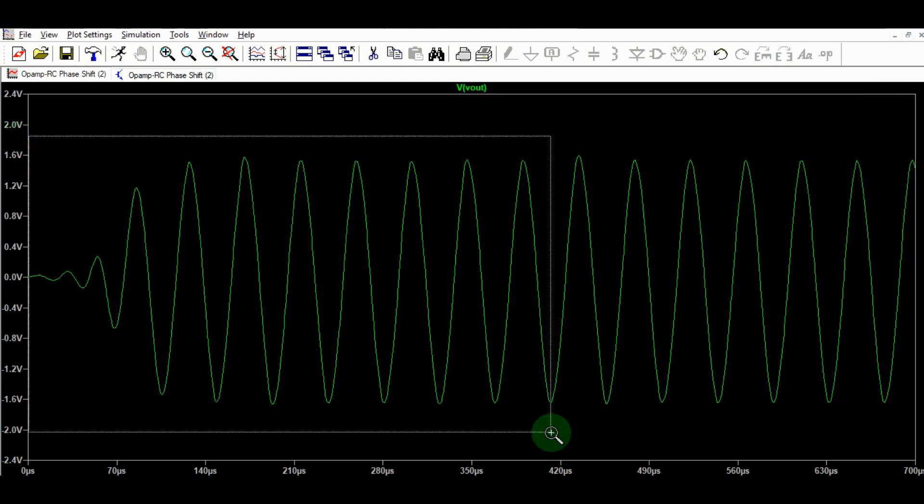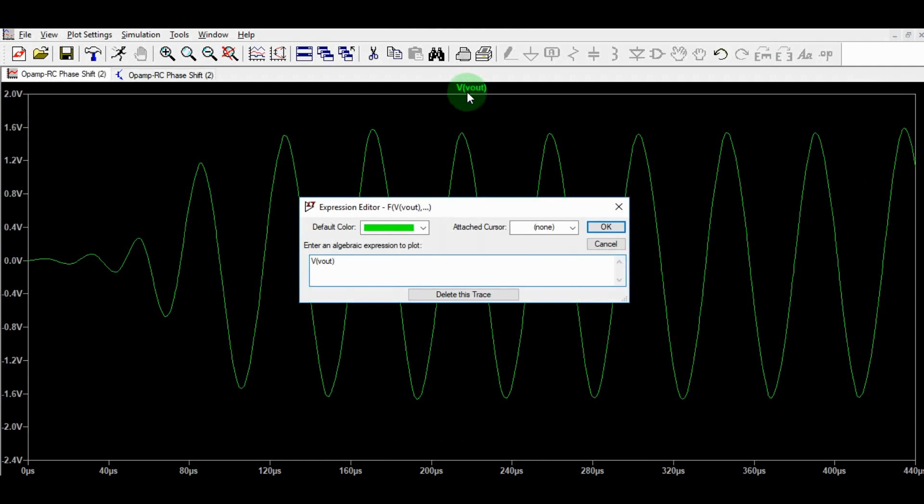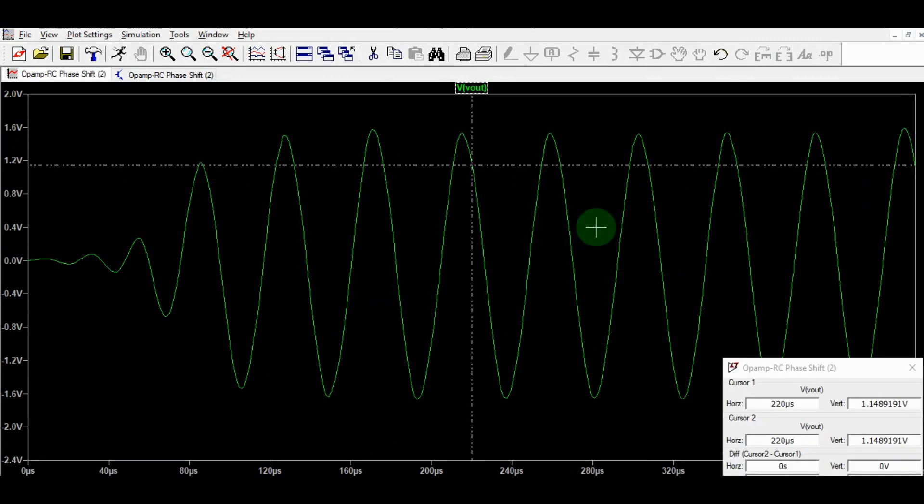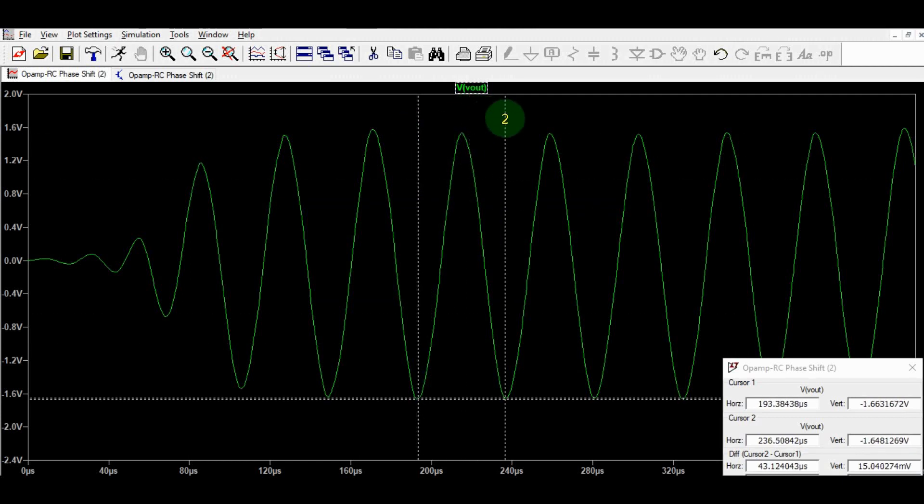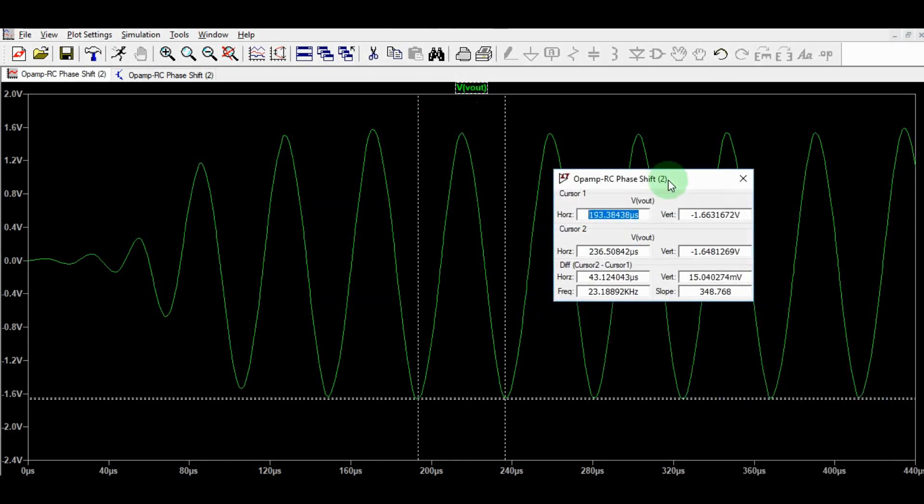Now I want to show you the oscillation frequency. Click here, right click, go to Attach Cursor, then select cursor first and second, click OK. This is cursor one and this is second cursor. You can see your oscillation frequency is around 23.1 kilohertz.